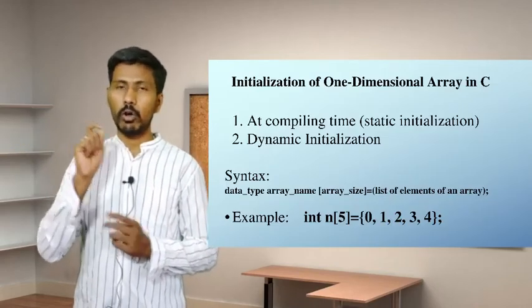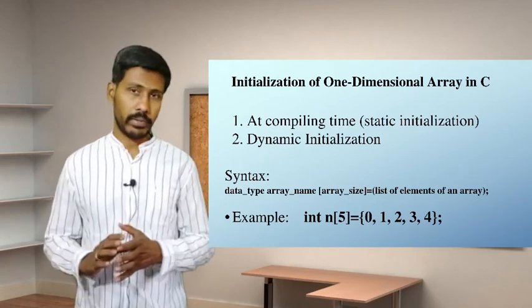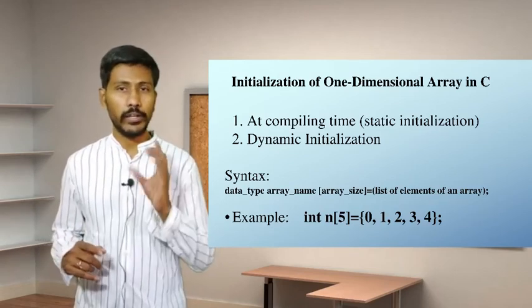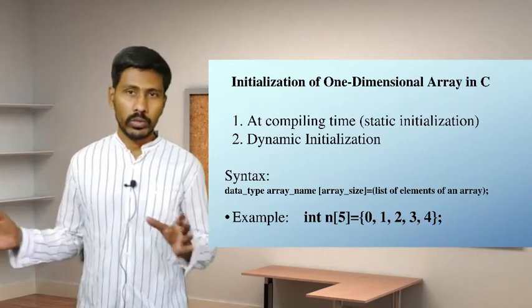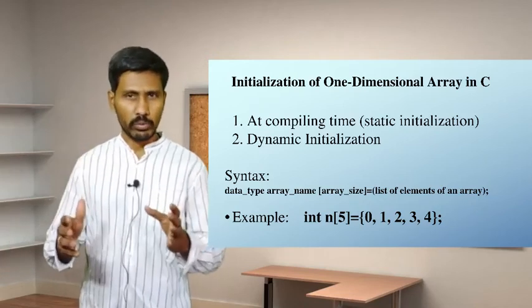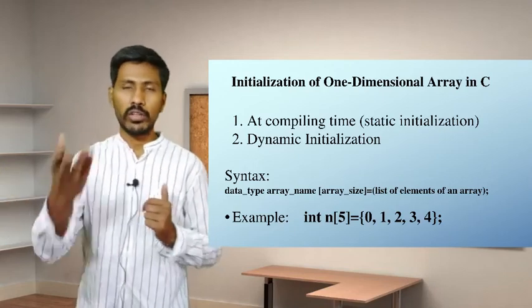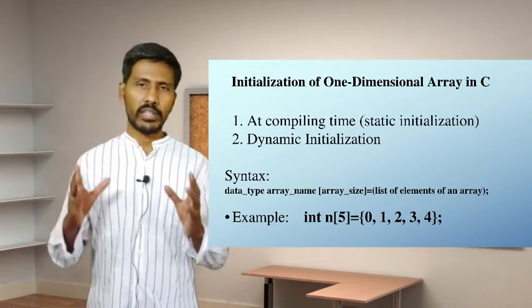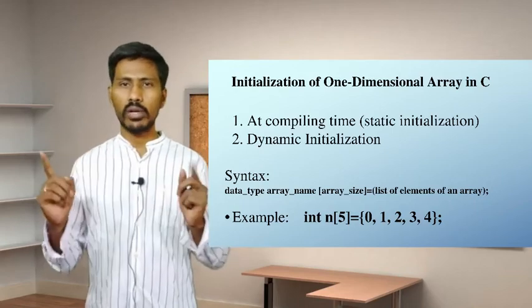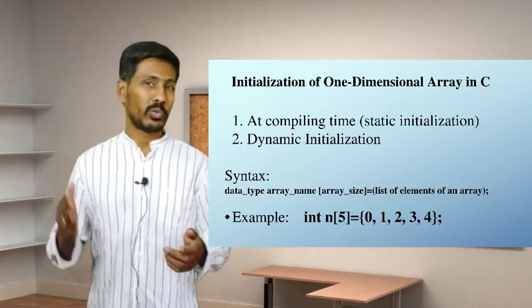This is an assignment or initialization done at the time of declaration itself. The values 0, 1, 2, 3 are stored in the array. The index is different from the data. If you declare an array of size 5, the index goes from 0 to 4 — that is, 5 elements with index from 0 to N-1.